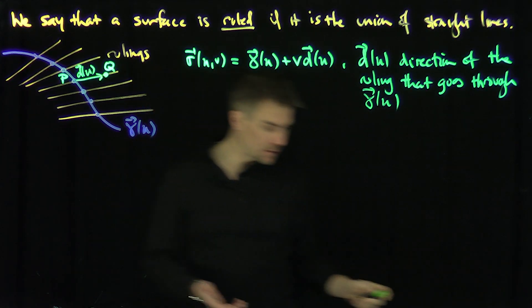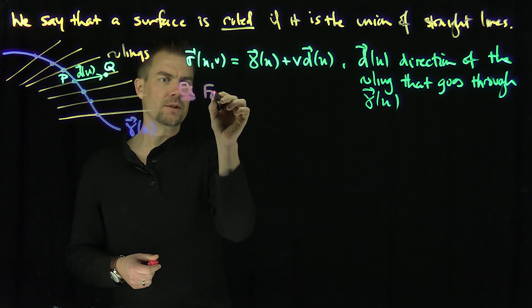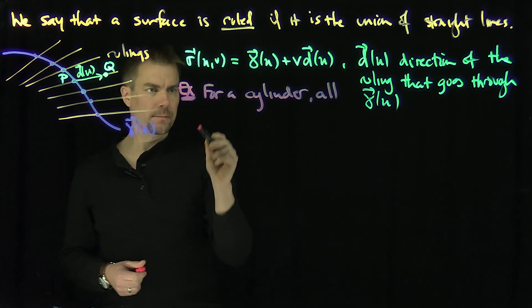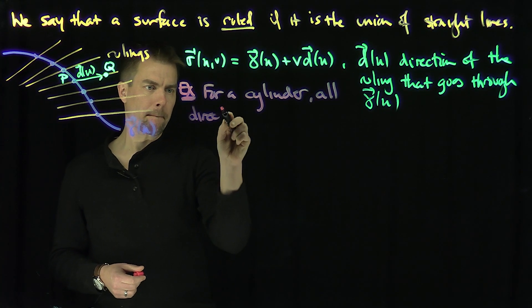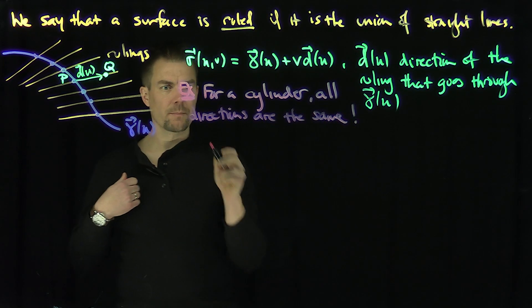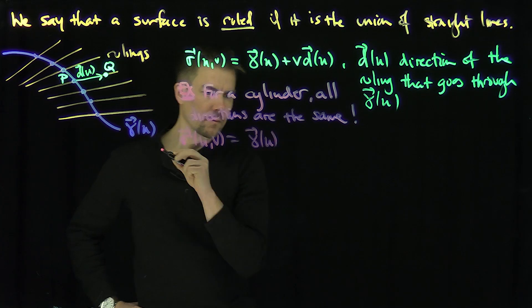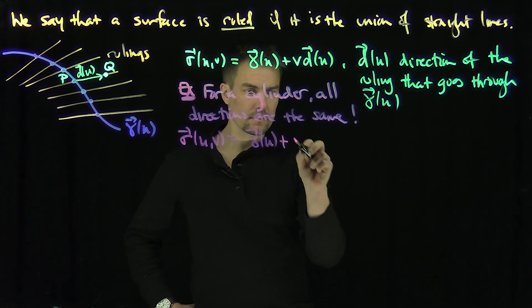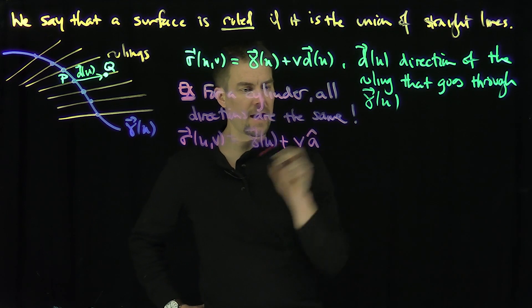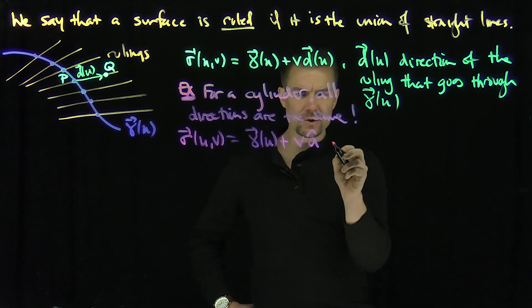And so there are some examples, like we said a cylinder's an example. So for a cylinder, all the directions are the same. And so in particular, if I look at this parameterization, sigma of u,v, which is gamma of u, that curve, plus v, and then there's a direction of all these lines. So I'm going to call that vector a hat, like that. That parameterizes what a cylinder is. And of course, that gamma is called the generator.